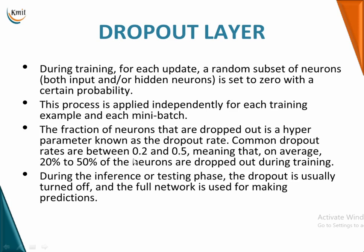The common dropout rate is typically kept between 20% and 50% (0.2 to 0.5), meaning on average 20% to 50% of neurons are dropped during training. You decide this after checking your model's capability. If your model performs wonderfully on training data but poorly on testing data, your model is overfitted. In that case, insert a dropout layer and test with dropout rates from 0.2 to 0.5 to find the best result.